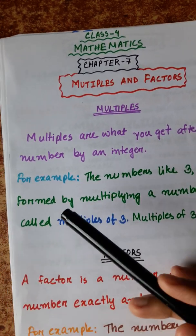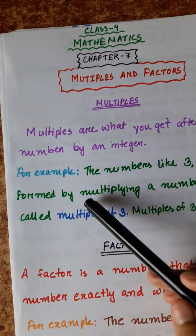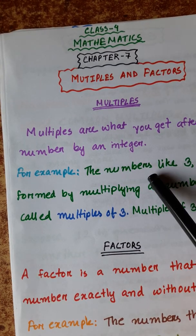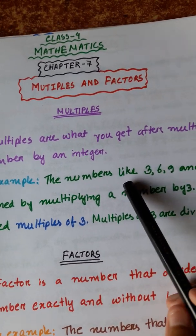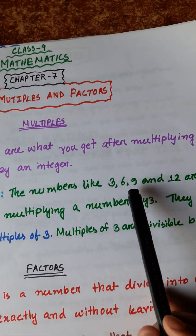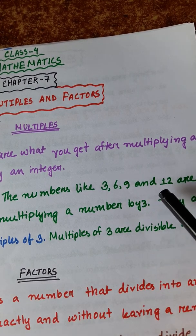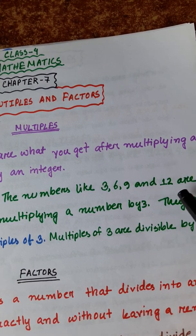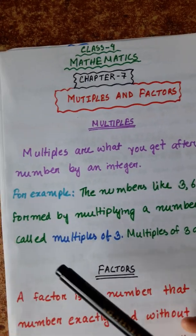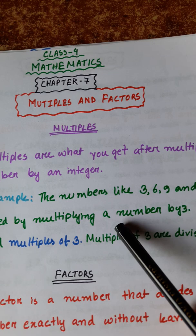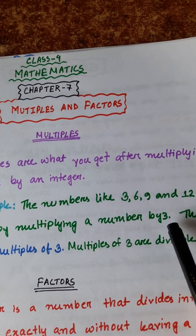Look at our examples. The numbers like 3, 6, 9, and 12 are formed by multiplying a number by 3.